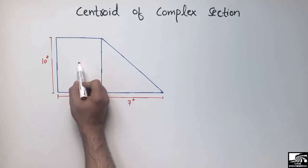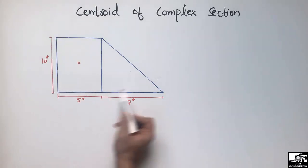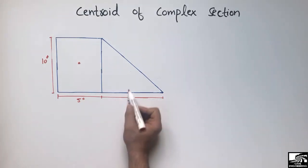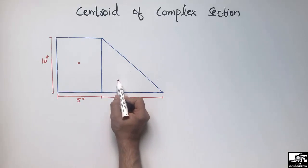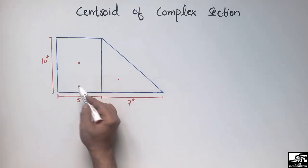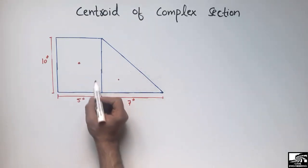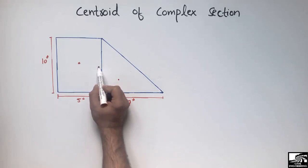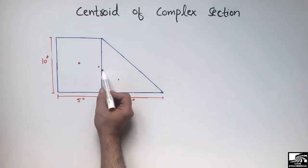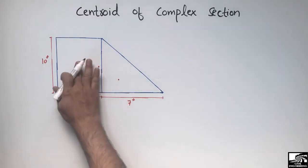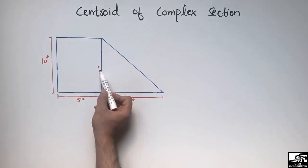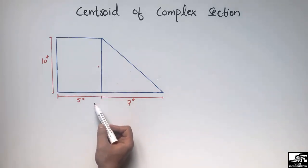The rectangle centroid can be found by dividing the width by 2 and the height by 2. Similarly, the triangle centroid can be found by dividing the width by 3 and the height by 3. But when both shapes are combined together, their centroid changes. The centroid of the individual shapes is removed, and the centroid of the complex shape may lie somewhere else.